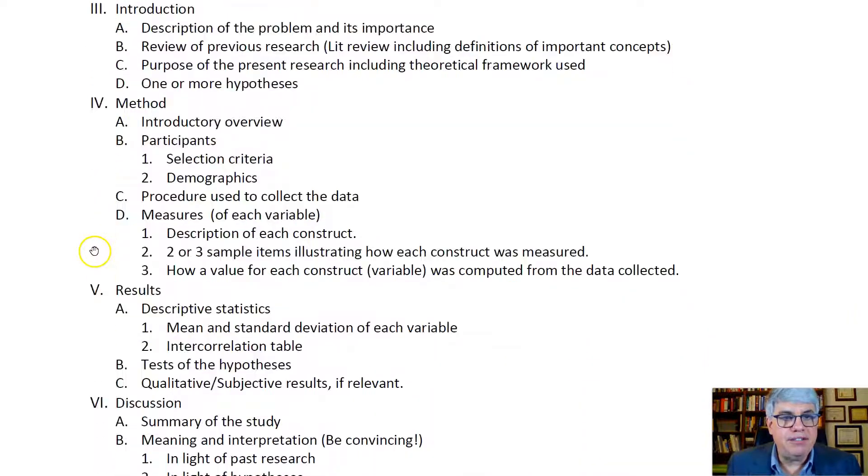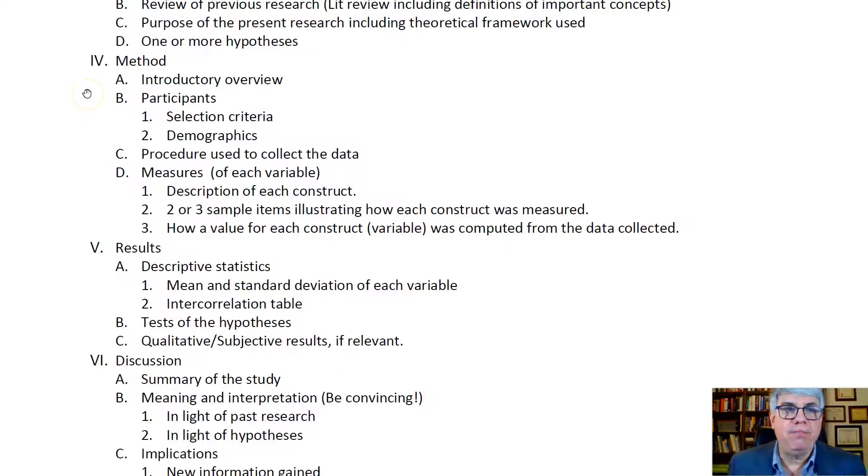Then the next section is the method. This is what you did to collect data. You're going to give an introductory overview and talk about the participants that participated in your study, the selection criteria, who could participate. Then you present the demographics of the participants: race, age, ethnicity, gender. Describe who participated because we want to know what type of people participated.